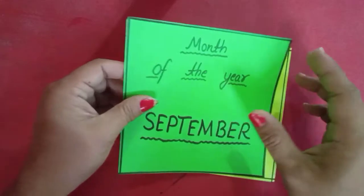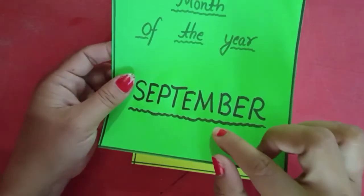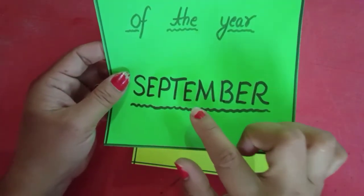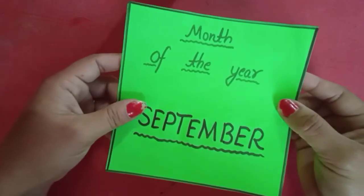Month of the year. Month of the year, September. This is a month of September. S-E-P-T-E-M-B-E-R. September. Month of the year is September.